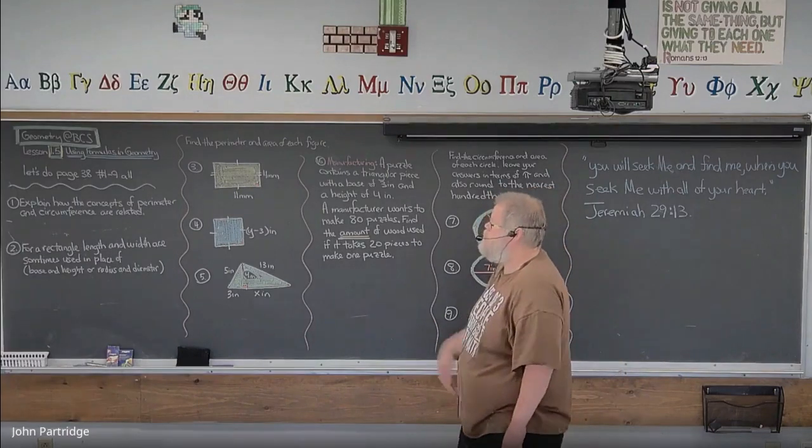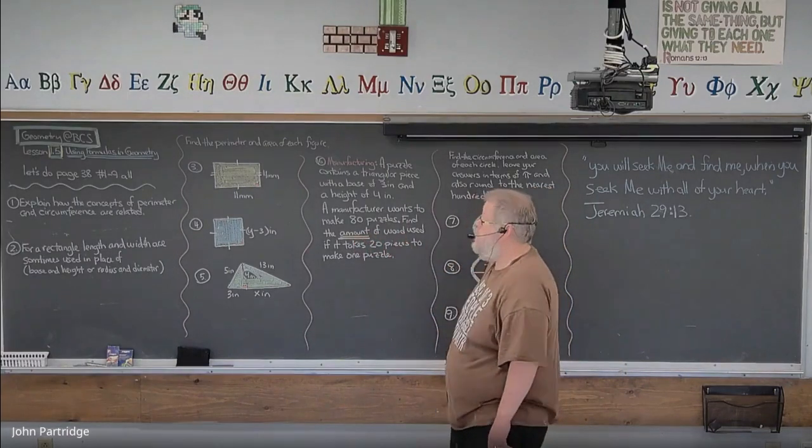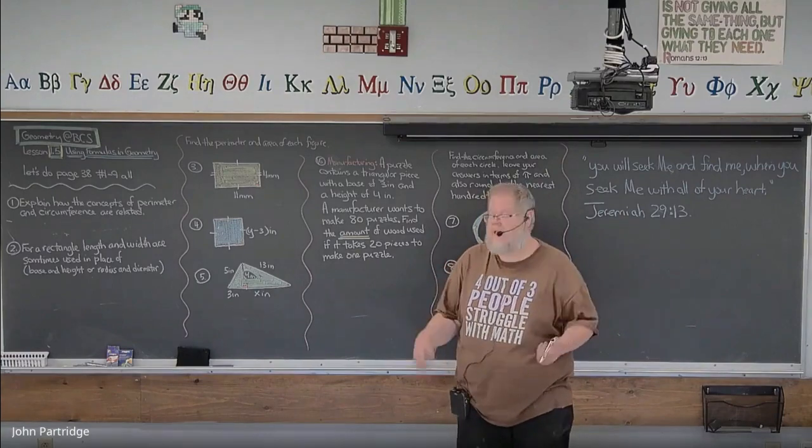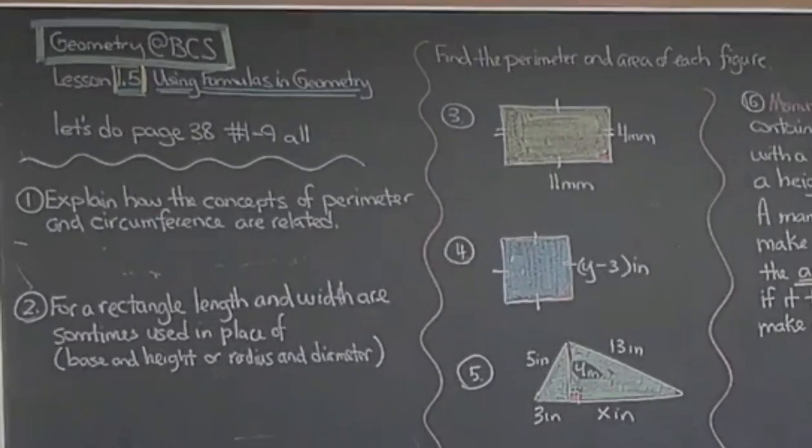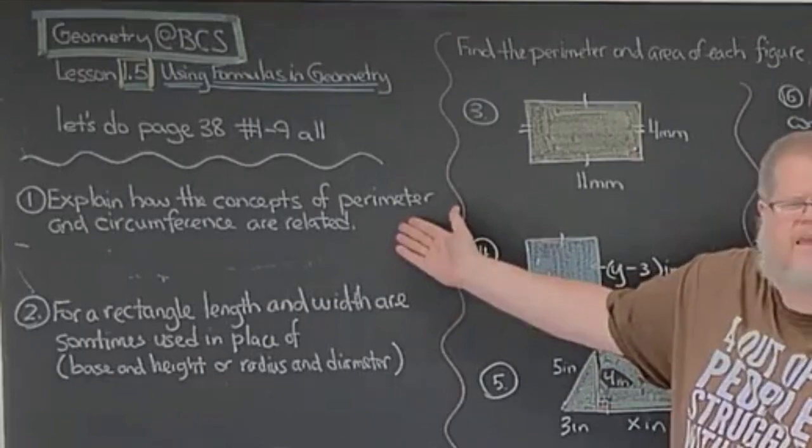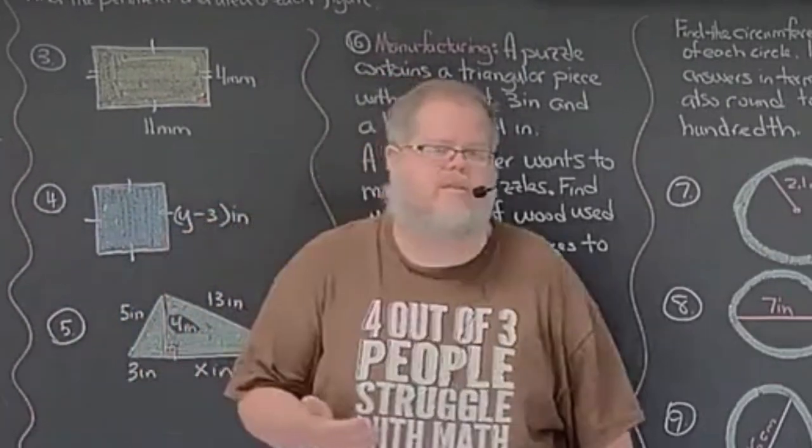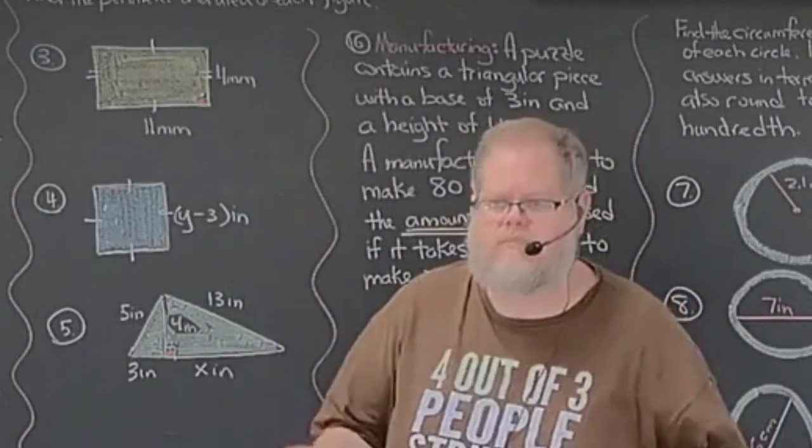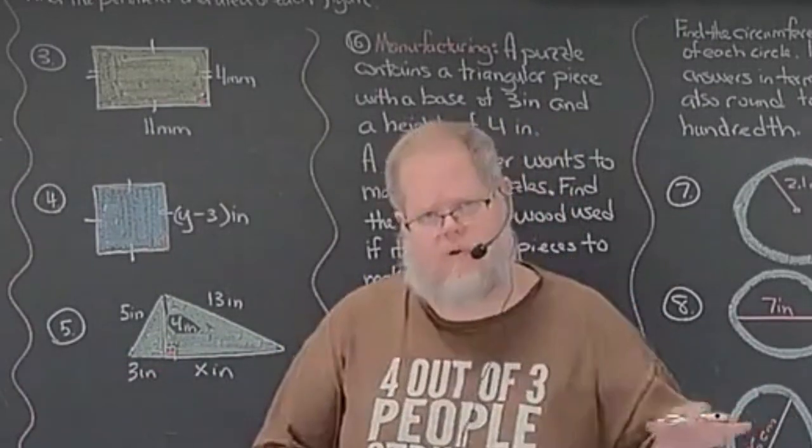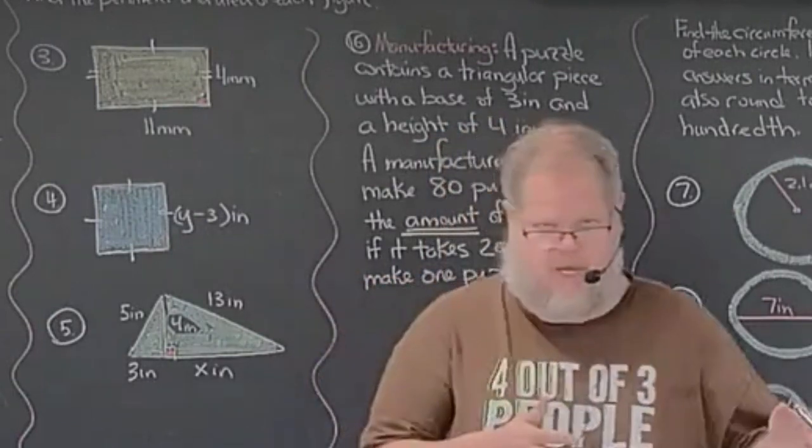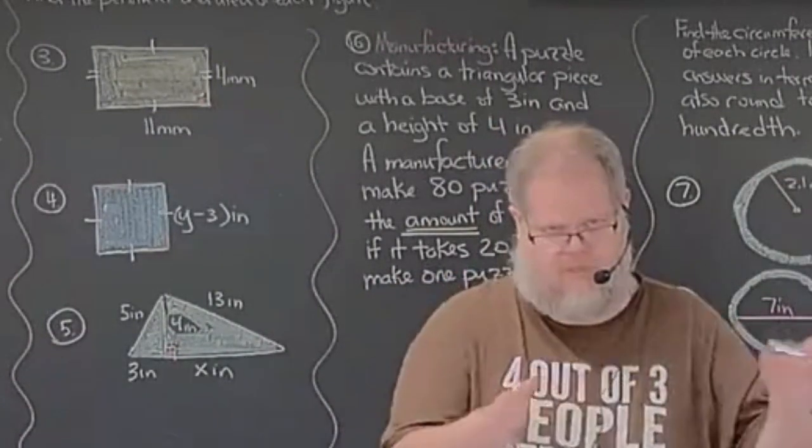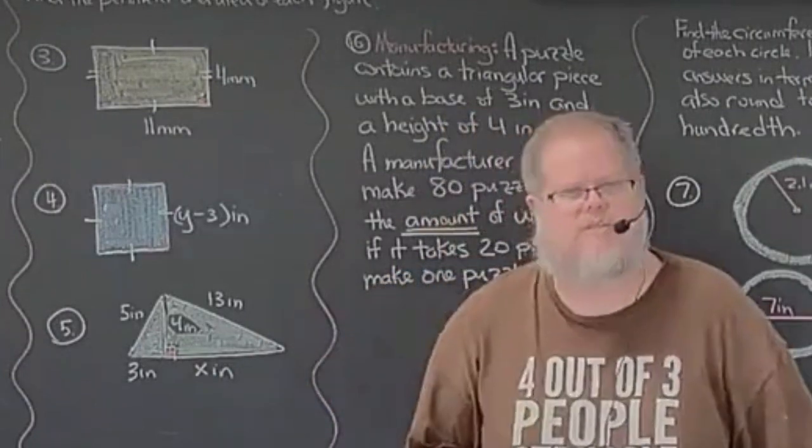We're going to go to page 38 in the textbook, and we're going to do numbers one through nine on the board today. So open up your textbooks to page 38, and then let's do number one. Explain how the concepts of perimeter and circumference are related. How are they related? So to get full points for this kind of a question, what am I looking for? I'm looking for a college response. I'm looking for more than circumference is round, rectangle is squarish, circumference is distance around, perimeter is distance around.